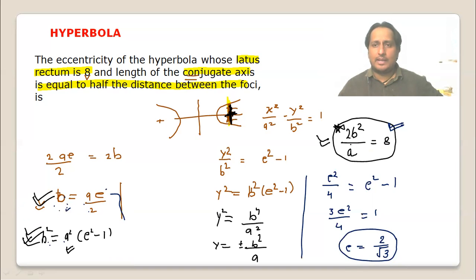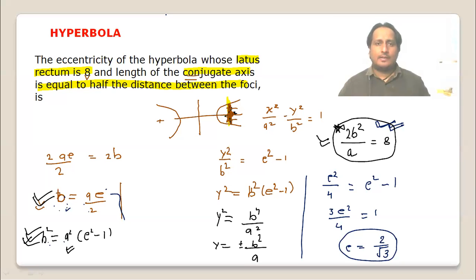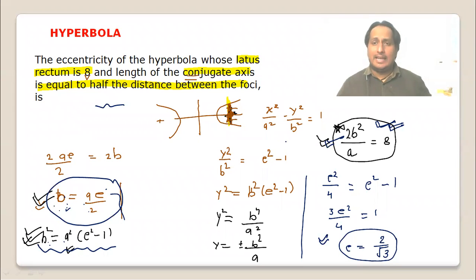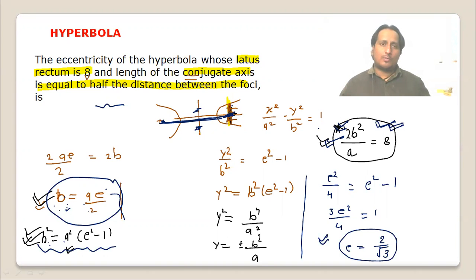The second condition about b/a was not ultimately needed — the given information was sufficient. The eccentricity came out correctly. We can also calculate individual values of A and B, and verify using 2b²/a = 8. The latus rectum formula 2b²/a is the key result to remember. Hope this is clear.